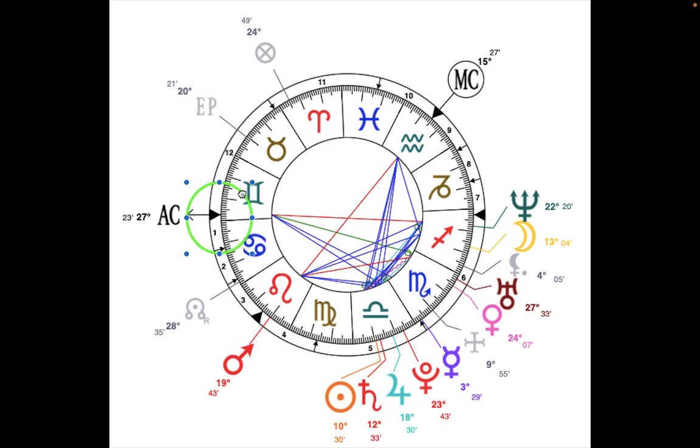You can see his rising is in Gemini, 27 degrees. His sun is in Libra, and his moon is in Sagittarius. Right there.